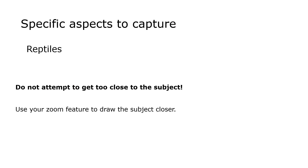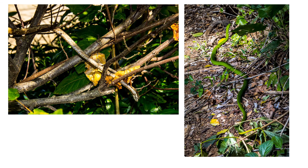As far as reptiles are concerned, do not attempt to get too close — use a zoom feature to get the subject closer if you can. Here we have a vine snake, which is very inclined to stay still and rely on camouflage, so you can get fairly close safely. Whereas a green mamba will not allow a close approach, and you need a zoom lens to get a decent photograph.